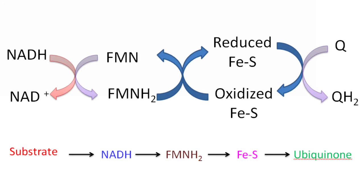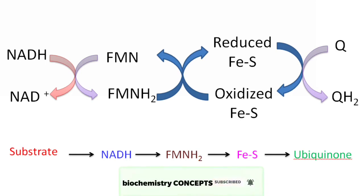Reduced NADH transfers its electrons to FMN. After receiving the electrons, FMN is reduced to FMNH2, and this FMNH2 in the next reaction transfers electrons to the oxidized iron-sulfur center, which is then reduced. These reduced iron-sulfur centers transfer their electrons to coenzyme Q, which is converted into its reduced form — QH2, or ubiquinol. So the sequence of electron transfer is: electrons from the substrate are received by NADH, transferred to FMNH2, then to the iron-sulfur center, and finally to ubiquinol.